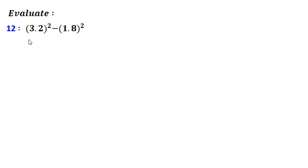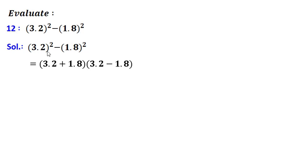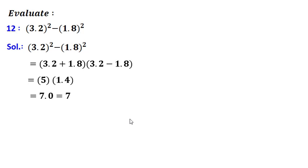Finally, the twelfth problem: 3.2a squared minus 1.8 squared. Using the formula a squared minus b squared, it is (3.2 + 1.8) into (3.2 - 1.8), which gives 5 into 1.4, and the answer is 7. We have understood how to factorize problems of the form a squared minus b squared using the formula a² - b² = (a + b)(a - b).